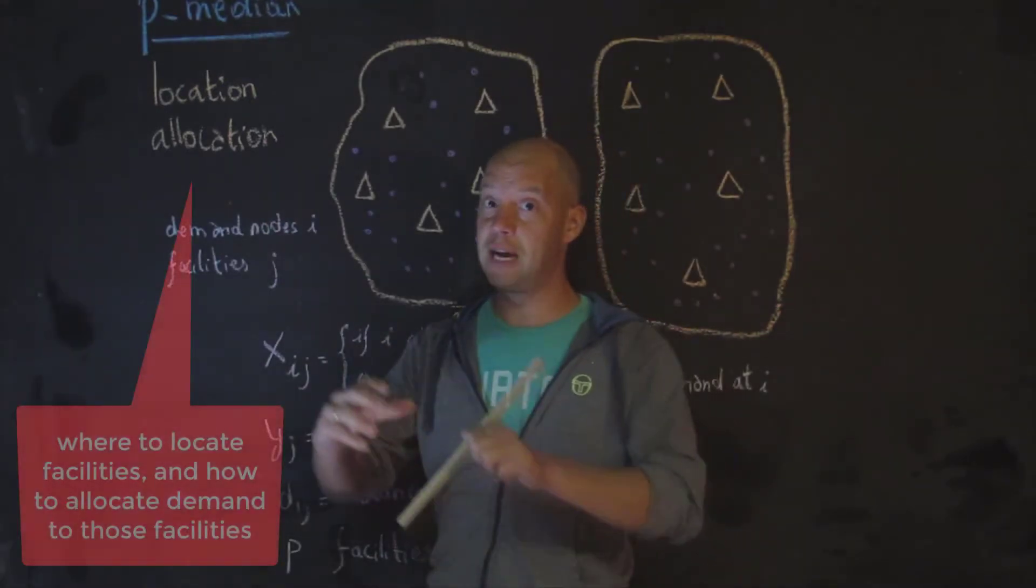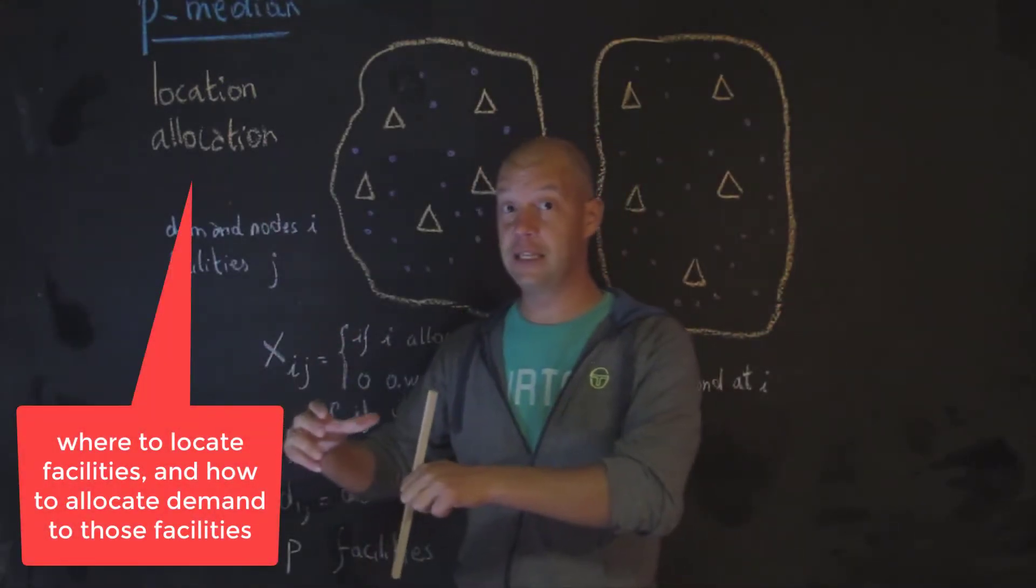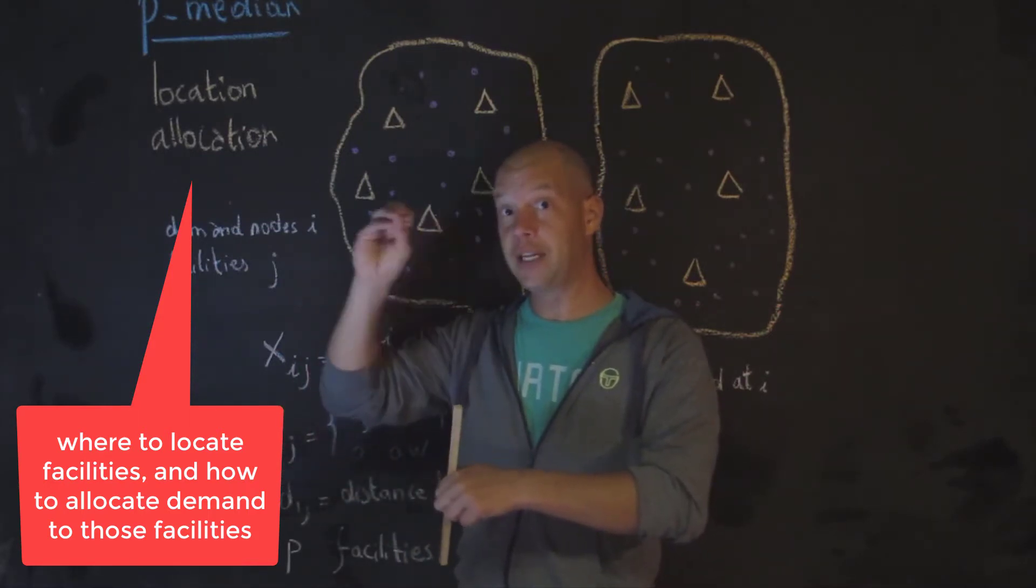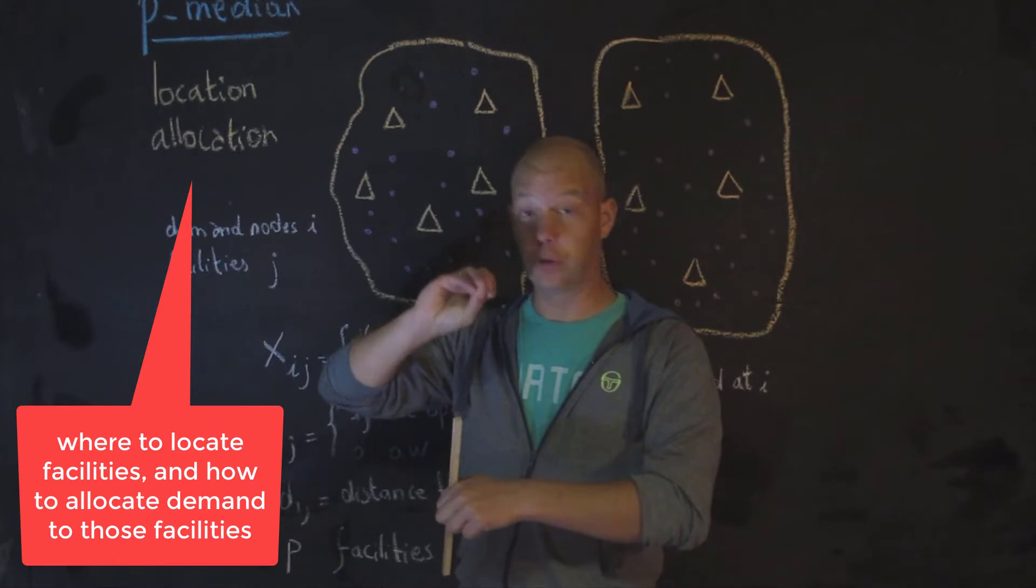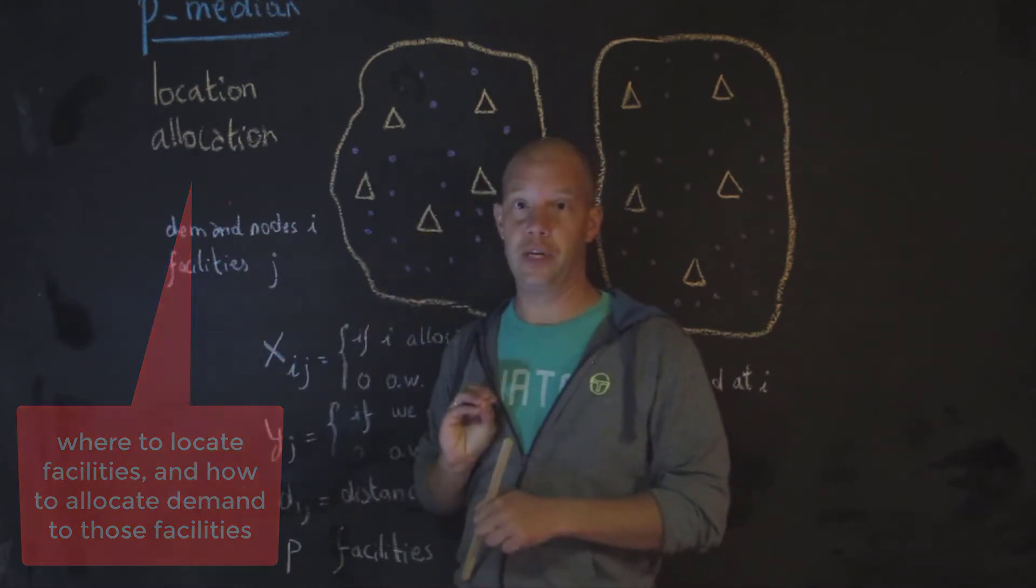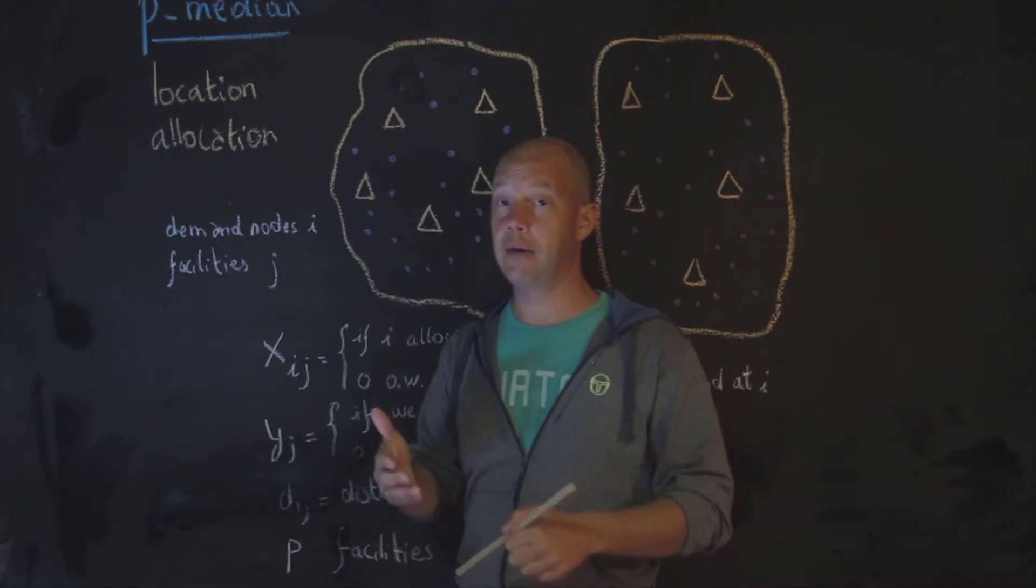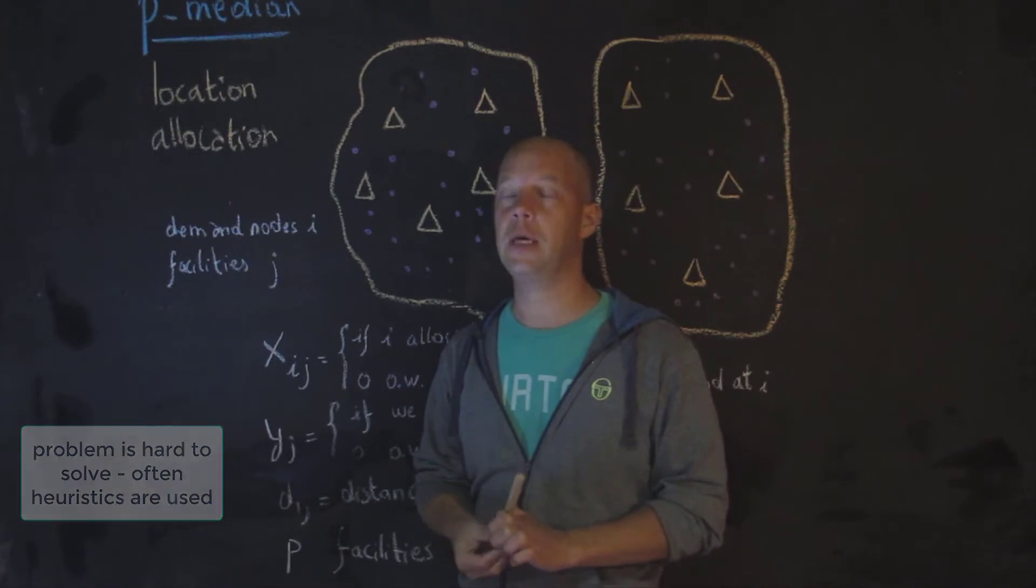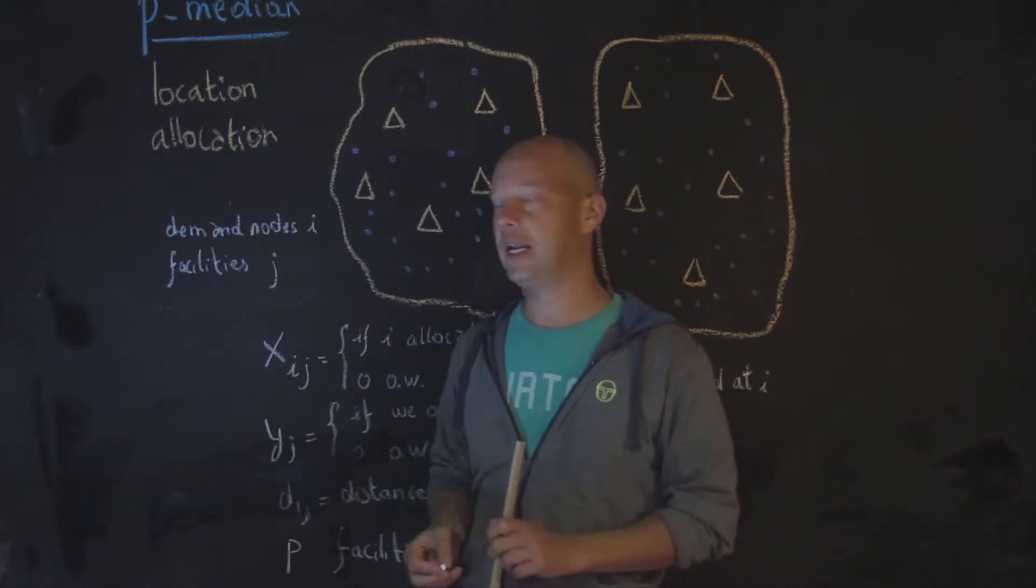So not only do we need to decide where we're going to locate the facilities, we also need to decide how we're going to allocate each demand node or demand unit, centroid, whatever, to the location. So it's actually a very complicated problem to solve compared to maybe some of these coverage models that we talked about earlier in the class.